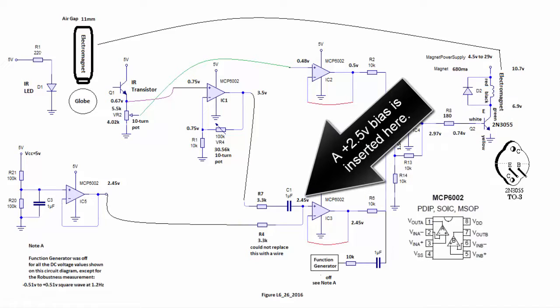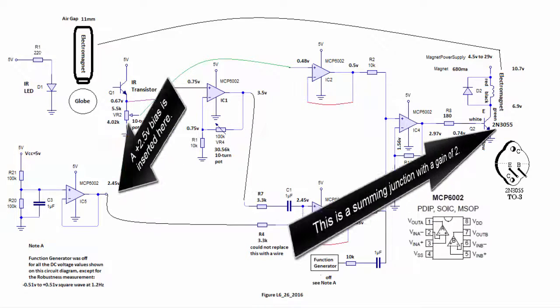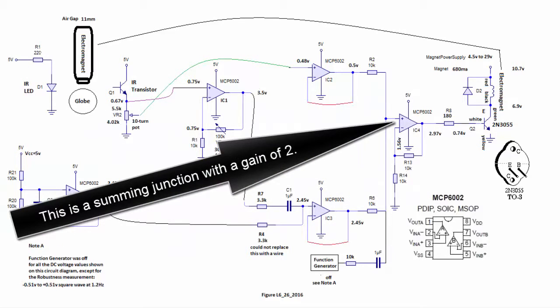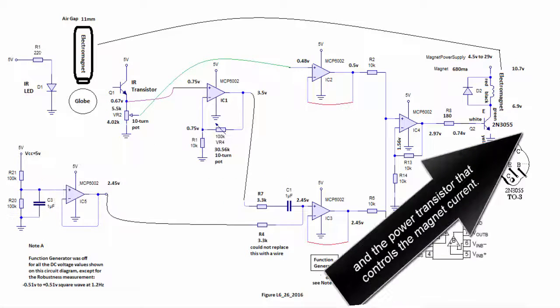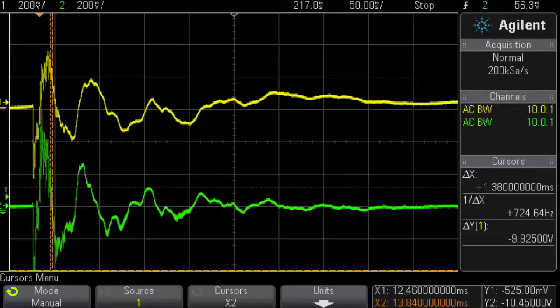A plus 2.5 volt bias is inserted here. This is a summing junction with a gain of 2, followed by the power transistor that controls the magnet current.